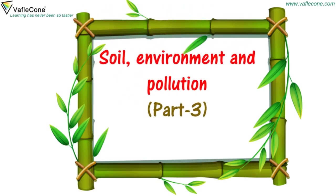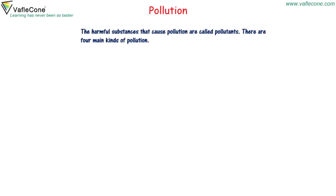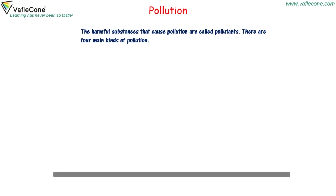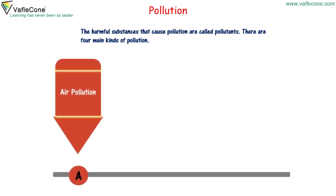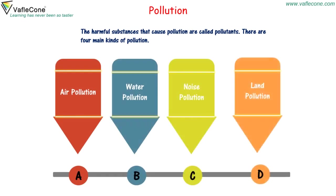Soil Environment and Pollution Part 3. The harmful substances that cause pollution are called pollutants. There are four main kinds of pollution: air pollution, water pollution, noise pollution, and land pollution.